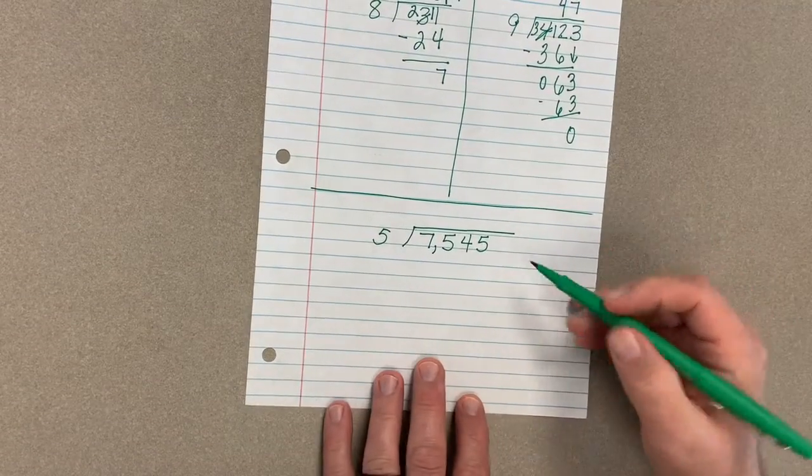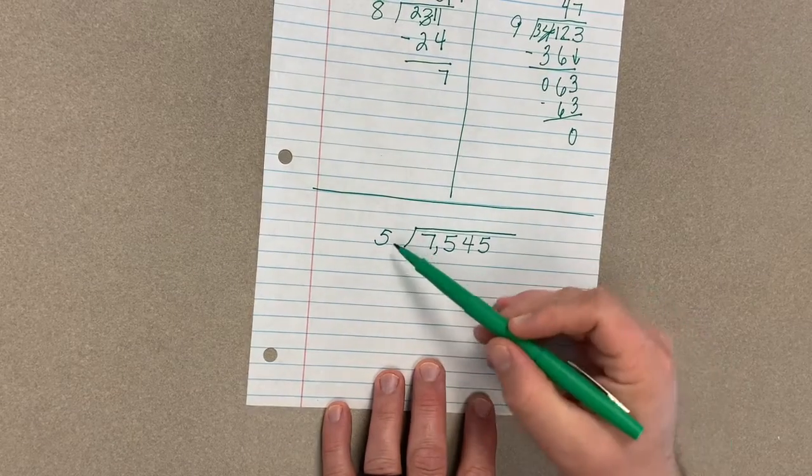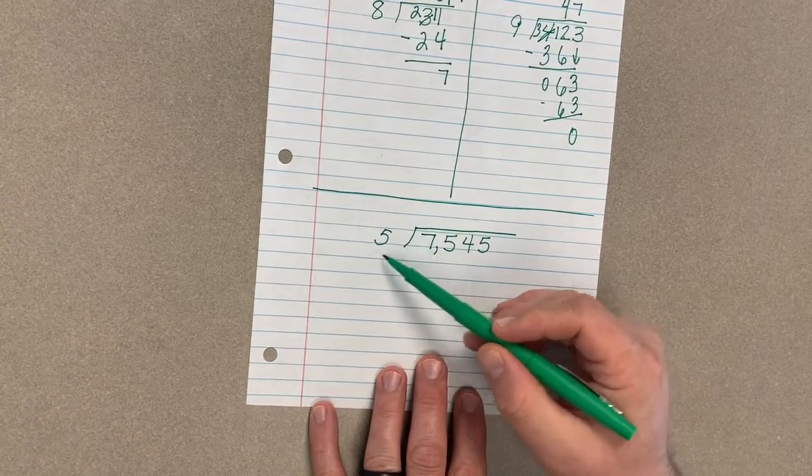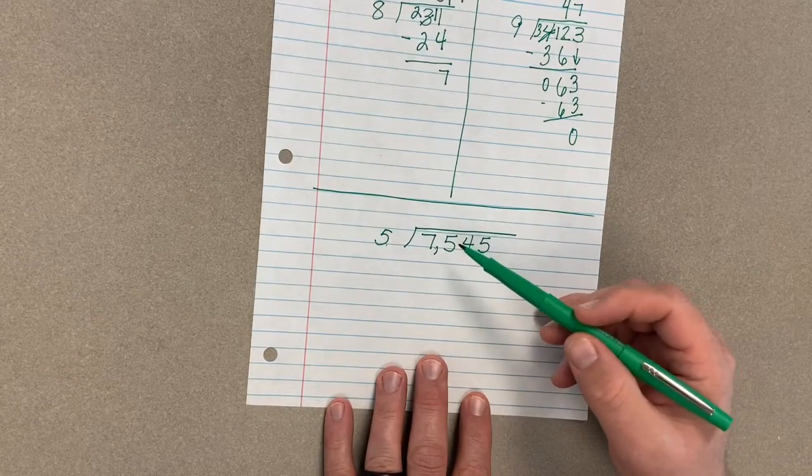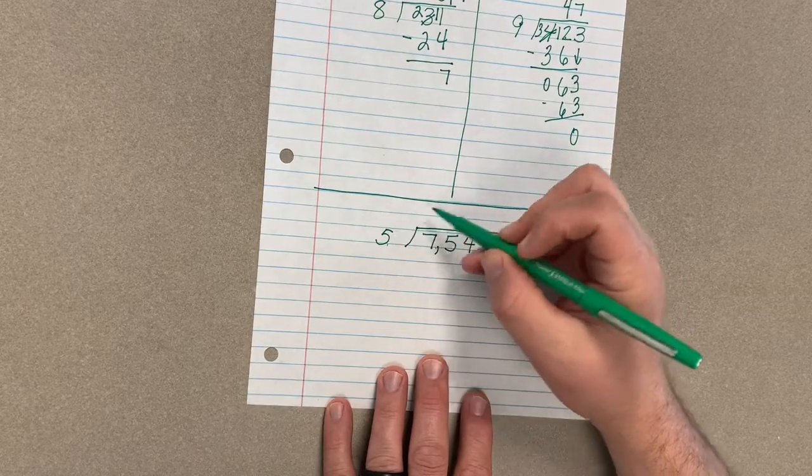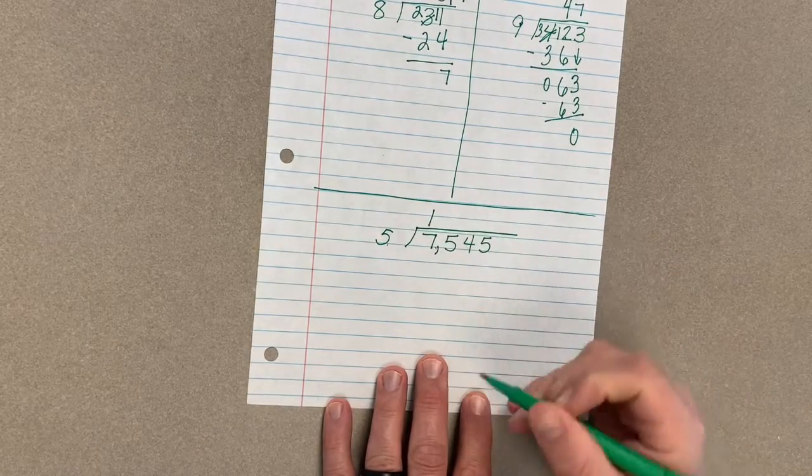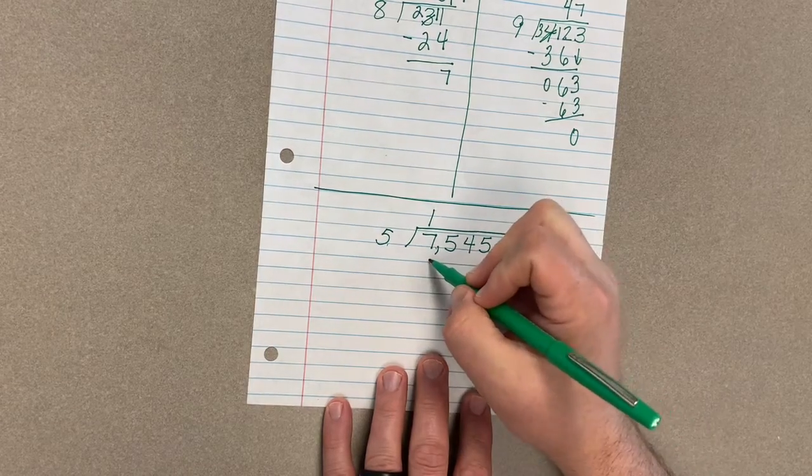Last but not least, we've got this big guy down here at the bottom. Now again, we're still dealing with just one single digit out front, so we don't have to do any guessing checking here. We should know these facts. Can 5 go into 7? Yeah, I sure can. Only one time though, because 2 times 5 would be 10 and it'd be too large. Let's take that guy there, subtract.